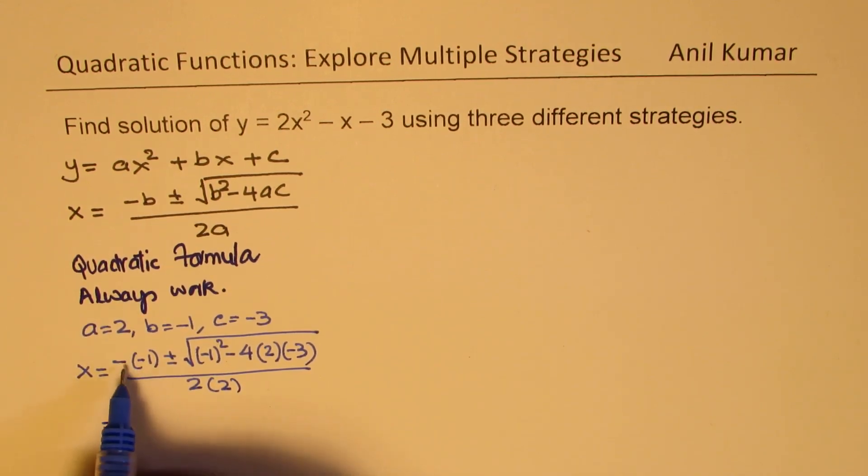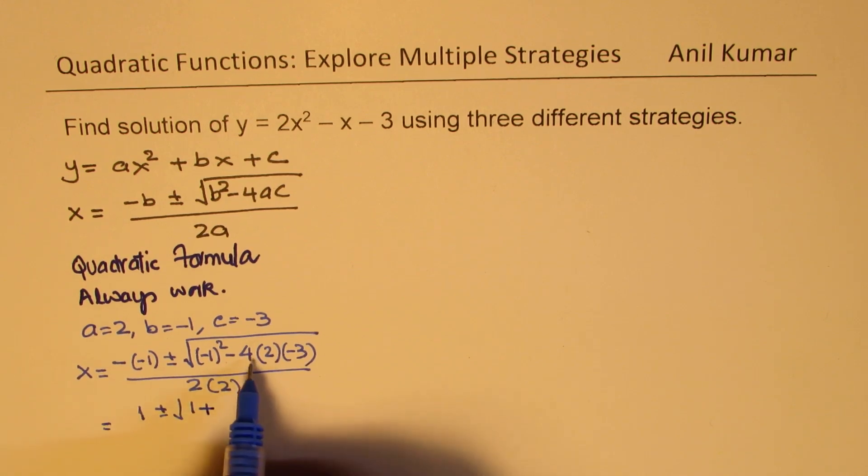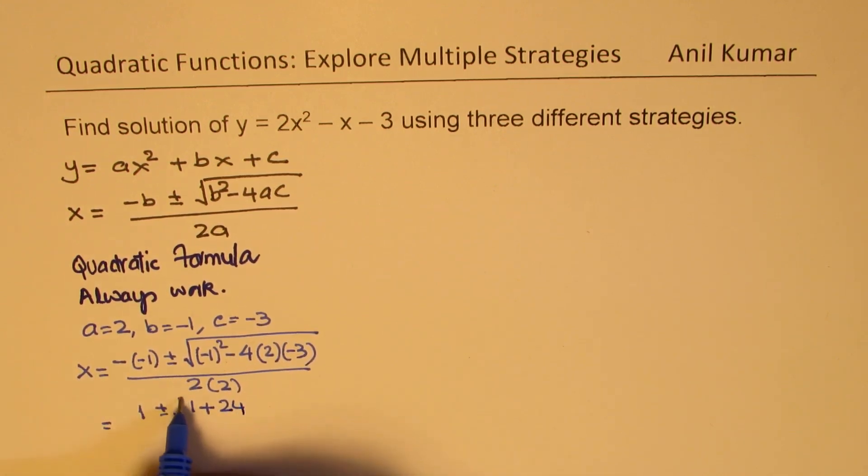So that gives you minus of minus 1 is plus 1 plus or minus square root of 1. Minus minus is positive. 4 times 2 is 8, 8 times 3 is 24. So we get 24 over 4.